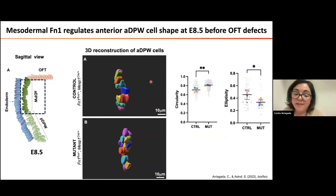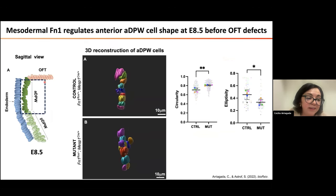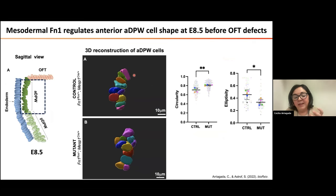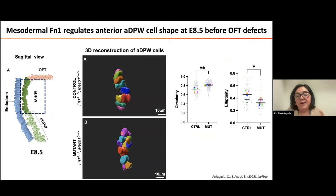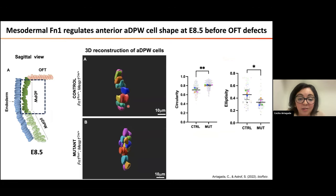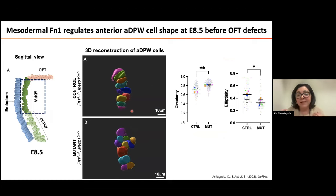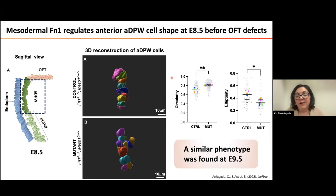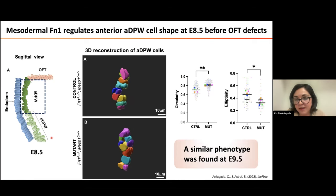To test this, I used Imaris software to surface the cells in the anterior and posterior dorsal pericardial wall view of the second heart field. I found that in control embryos the cells are more elongated than in mutants — in mutants they are more circular. Also, the epithelium is much more disorganized in mutants; they form multiple layers instead of the monolayer seen in control embryos. Interestingly, this occurred before the defect we found in outflow tract elongation at E8.5, and it only occurred in the anterior dorsal pericardial wall — in the posterior, the cells are normal.